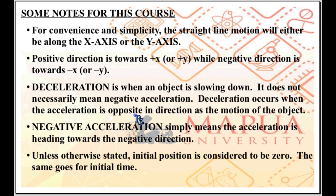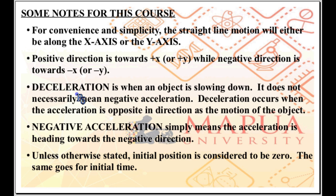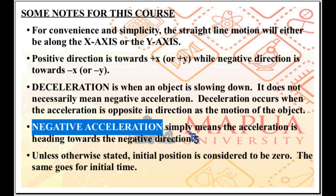That's because those books set the default direction of motion to positive. But in terms of positive x and negative x on the x-axis, deceleration does not necessarily mean negative acceleration. There will be cases where the object is moving in the negative x direction and is decelerating. If the object moves in the negative x direction and decelerates, the acceleration is opposite in direction — meaning positive. So the acceleration is positive, and yet you have deceleration. Negative acceleration simply means the acceleration is heading toward the negative direction.